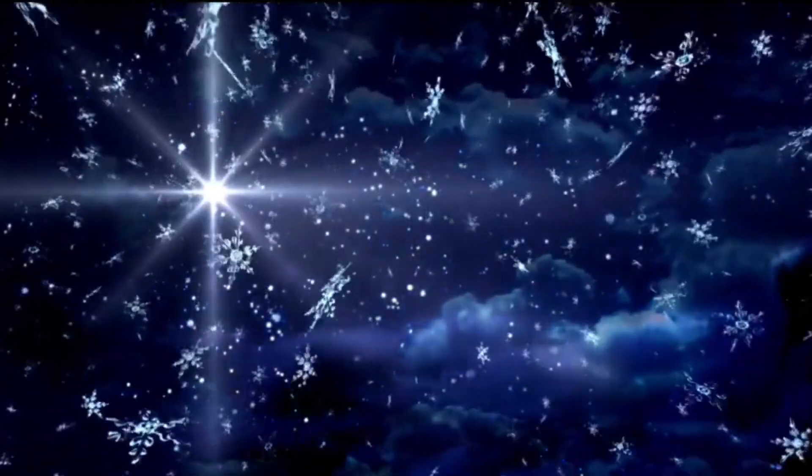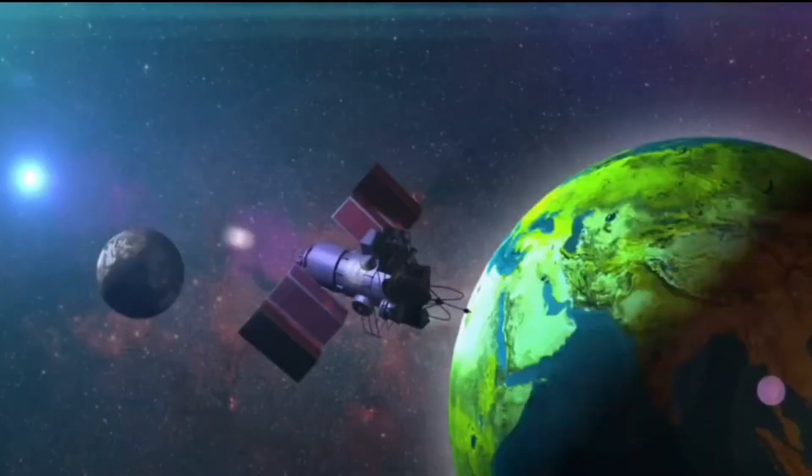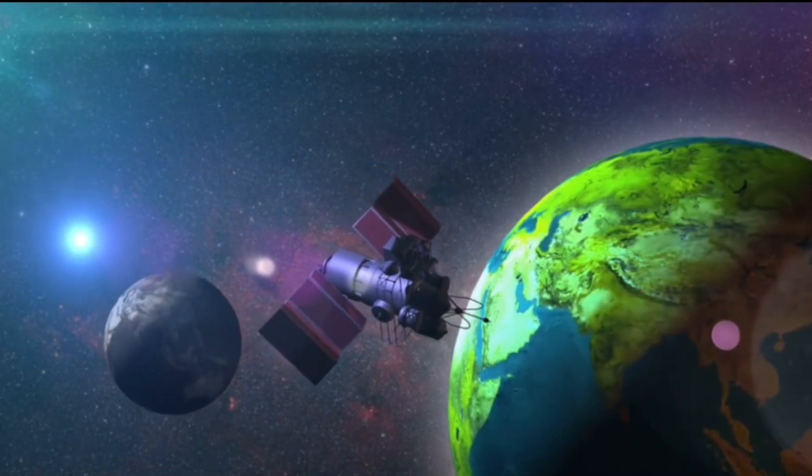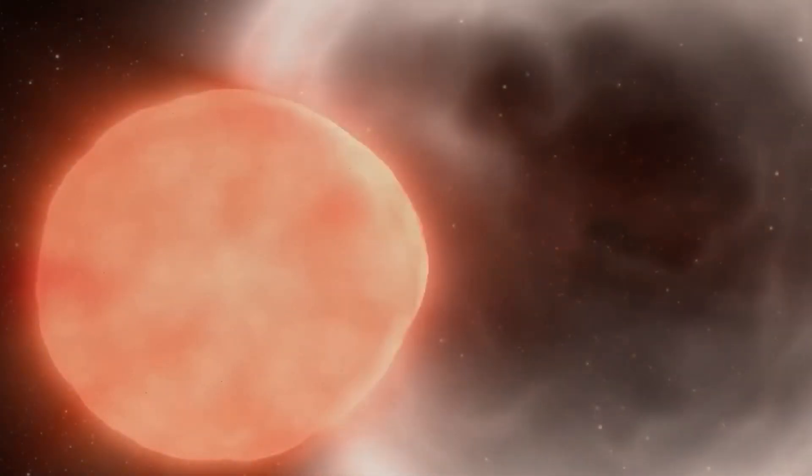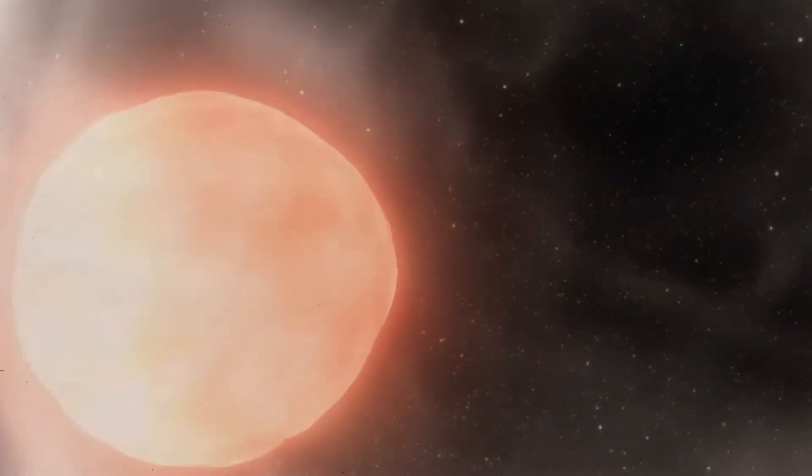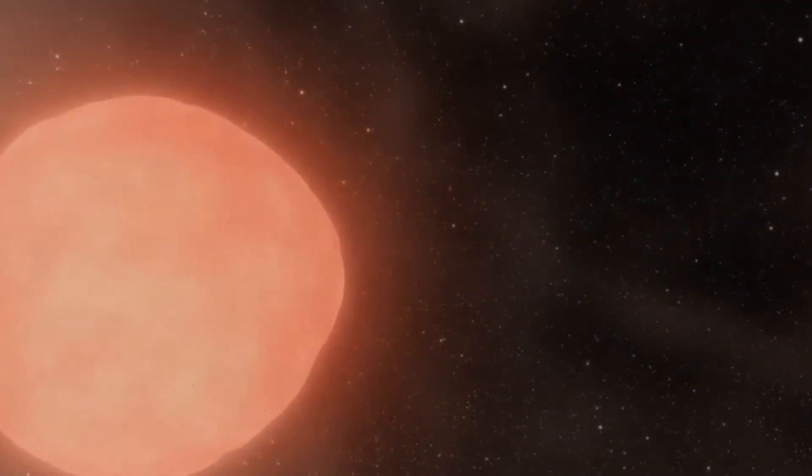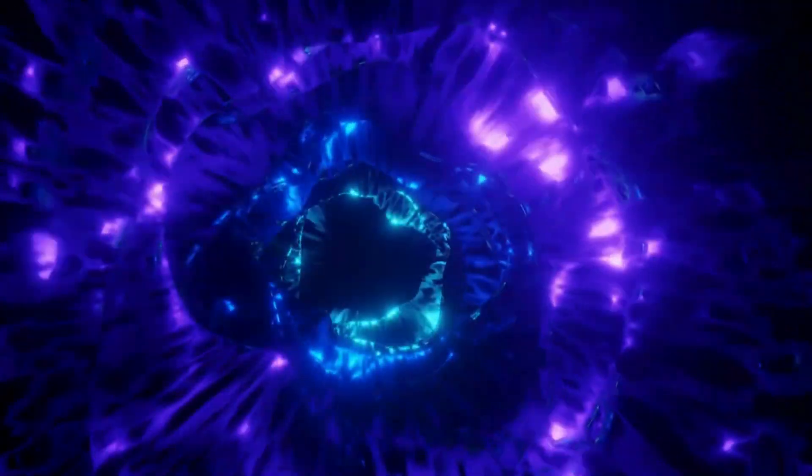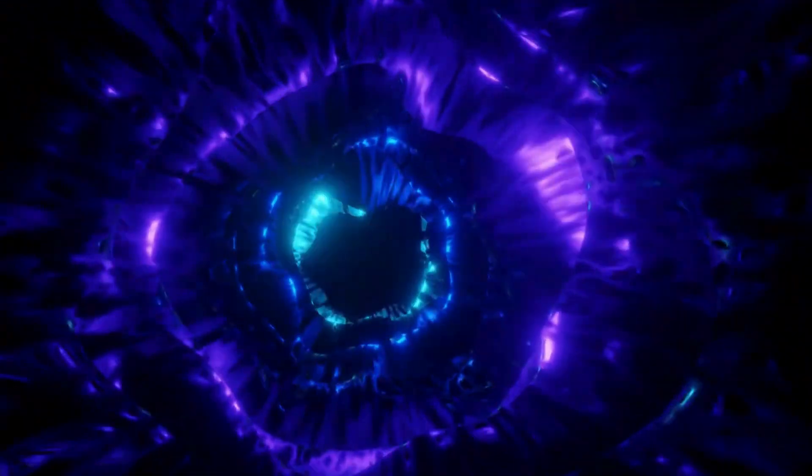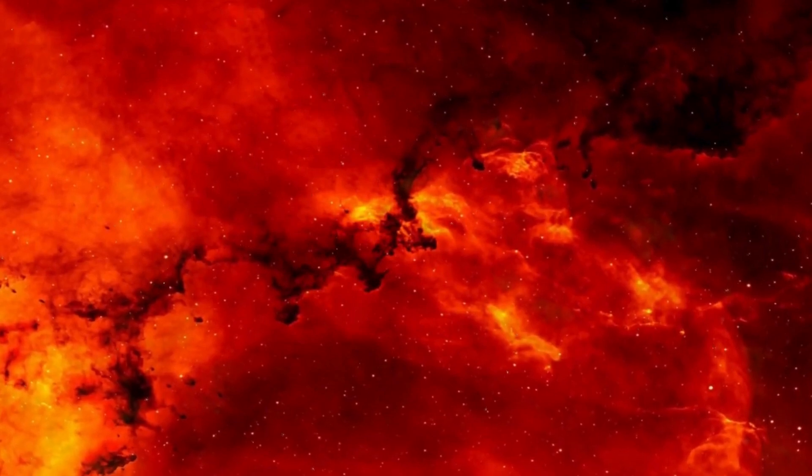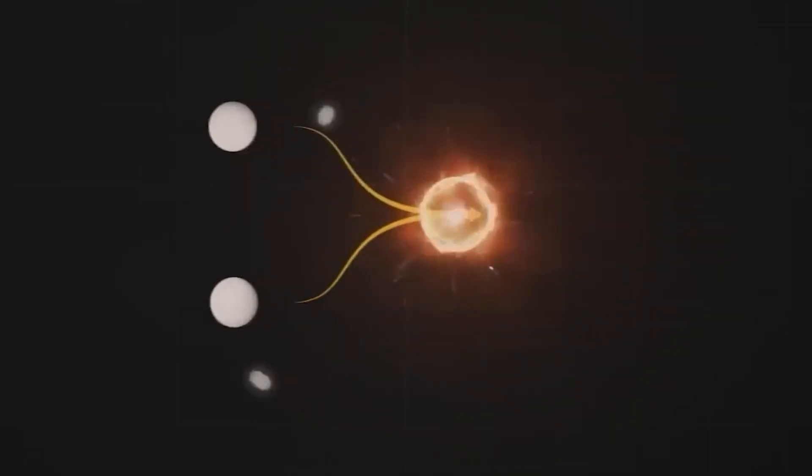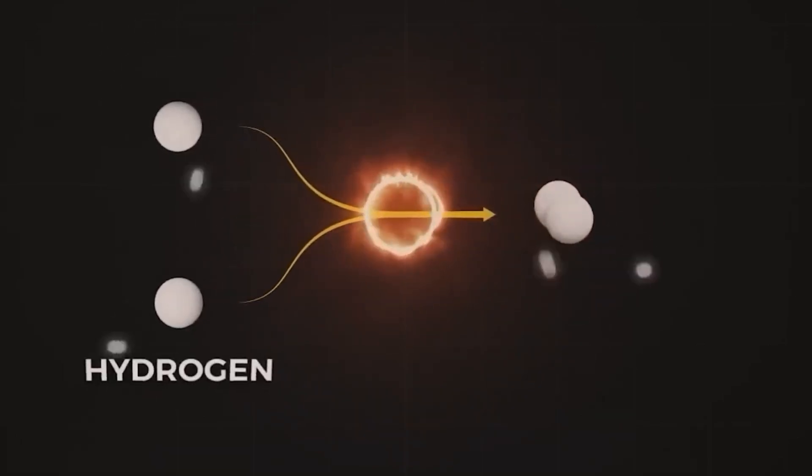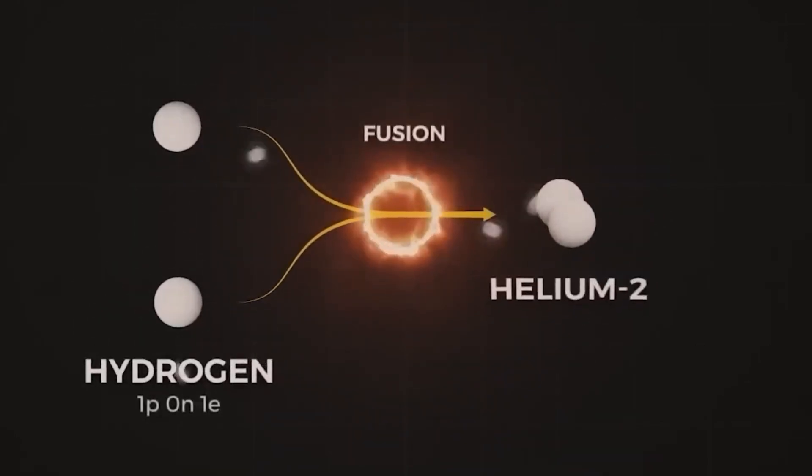When Betelgeuse eventually does go supernova, the explosion will have a dramatic but not dangerous impact on Earth. Given the star's distance, the energy from the explosion will not be harmful to life. However, the event will produce an influx of high-energy particles and electromagnetic radiation, which could potentially affect Earth's atmosphere and lead to temporary disturbances in the ozone layer. This might result in minor increases in ultraviolet radiation reaching the surface, but our planet's atmosphere and magnetic field will shield us from the most harmful effects.